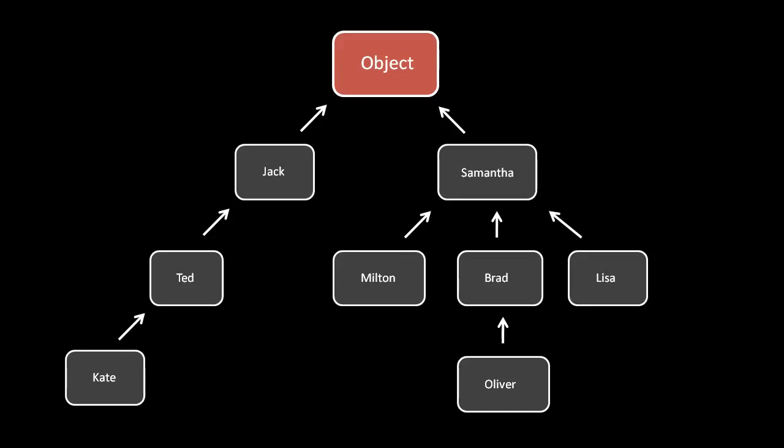In some object-oriented languages, every class is required to inherit from at least one other class, and by default that class is a special class called the object class, which is built into the language. So every class except object itself is inheriting from some other class, and the object class effectively sits at the top of the hierarchy. The built-in object class is meant to represent just a generic object of any kind, so it makes sense that any classes you create should be subtypes thereof. You'll see this kind of inheritance tree first in Python, and then later in Java.